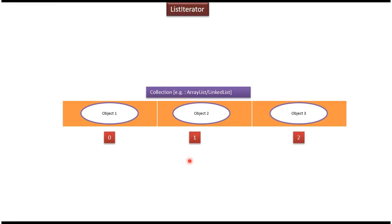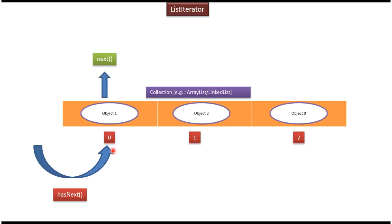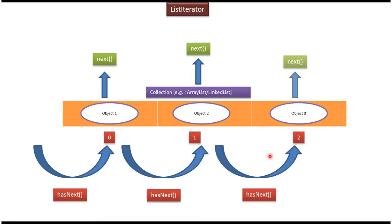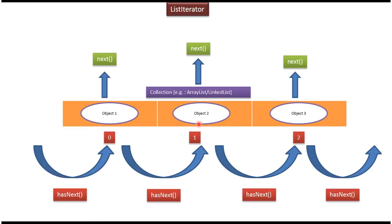List Iterator has a hasNext method. This method will return true if the next object is there, and using the next method we can get that object. Each time you call hasNext, if a next object is present it will return true and we get the object using next. When there is no object left in the iterator, hasNext will return false. The hasNext and next methods are used to move the cursor in the forward direction in the list and get each element one by one.